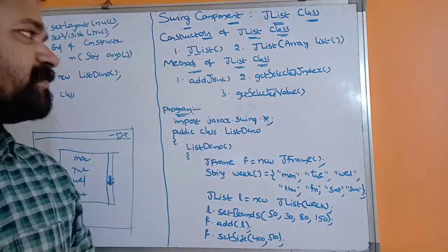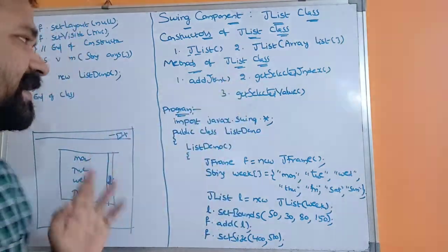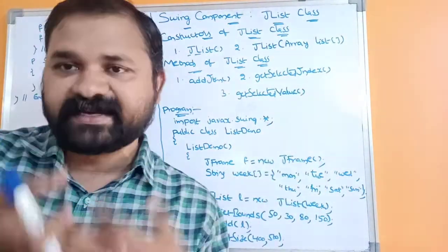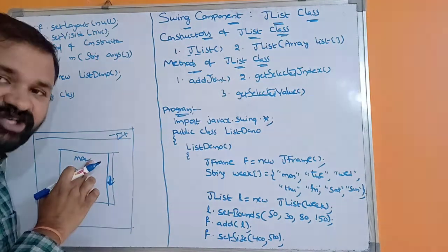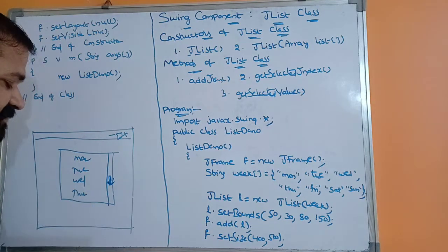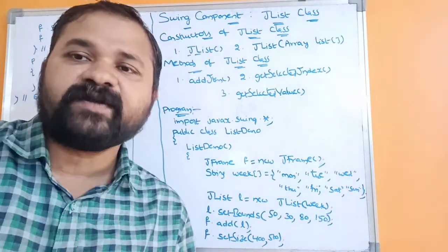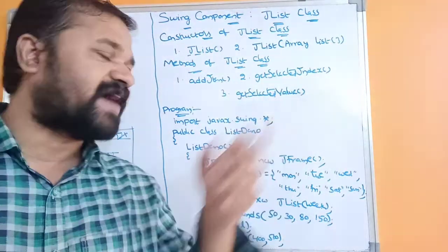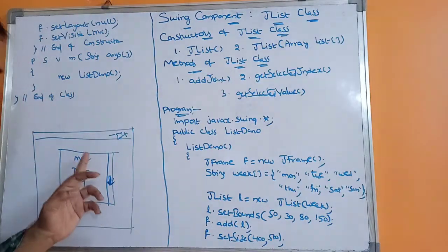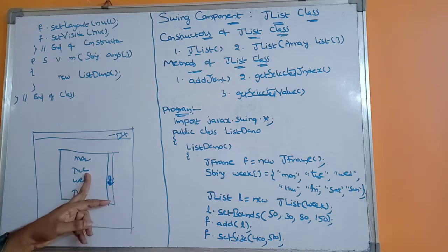Now let's see the methods of the JList class. The first one is addItem(), which is useful to add an item to the list. The second one is getSelectedIndex(), which returns the index of the selected item — if you select Monday it returns zero, Tuesday returns one, Wednesday returns two, and so on. The third one is getSelectedValue(), which returns the value of the selected item — selecting Monday returns "Monday", selecting Tuesday returns "Tuesday".